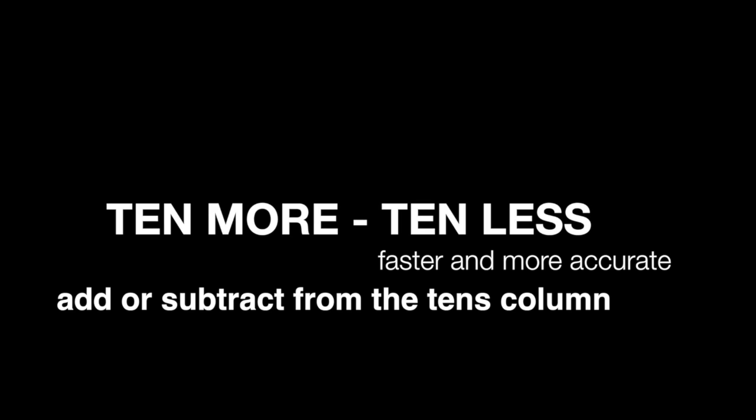Now that you've learned all about place value, it's time to review a math strategy that will help you become a faster and more accurate mathematician. The strategy is quite simple. All you have to do is add or subtract from the tens column. You never touch the ones column because the number 10 has zero ones or no ones to add.